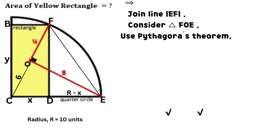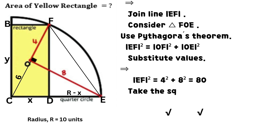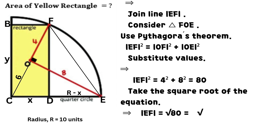Join line EF. From triangle FOE, use Pythagoras theorem. The square of line EF equals the sum of the square of line OF and the square of line OE. Substitute values: the square of line EF equals the sum of the square of 4 and the square of 8, which equals 80. Take the square root of the equation. Line EF equals the square root of 80, which equals 4 times the square root of 5.